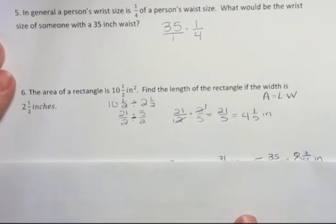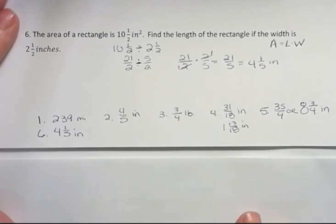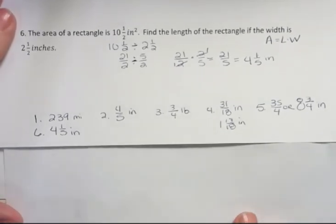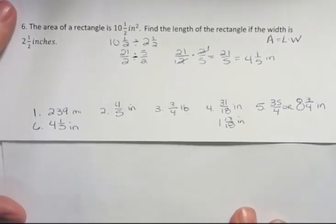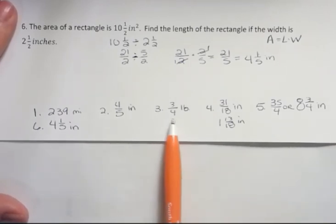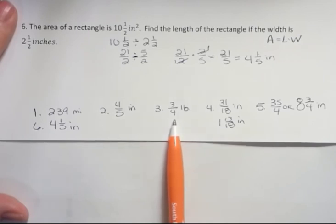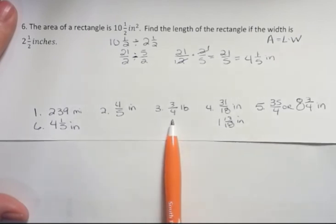Let's see how you did on the other ones that you did on your own. You should have gotten 239 miles for the first one, 4 fifths of an inch for the radius of number 2. For number 3, each girl is going to get 3 fourths of a pound or 0.75 if you're thinking about it in decimals.